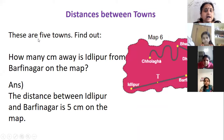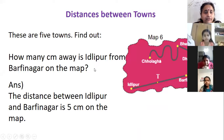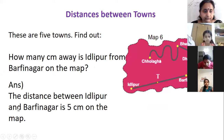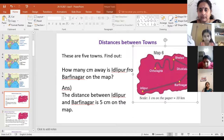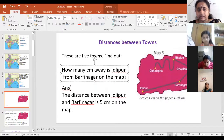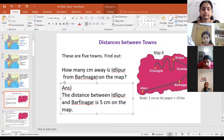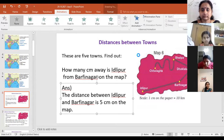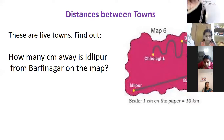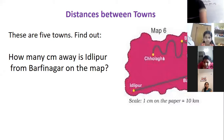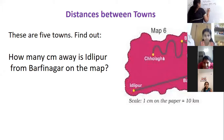Now, distance between towns. These are five towns. Find out how many centimeters away is Idlipur from Barfinagar on the map. The scale is given: one centimeter on paper is 10 kilometers. One centimeter on paper is 10 kilometers.